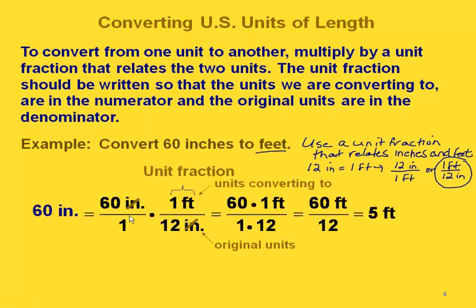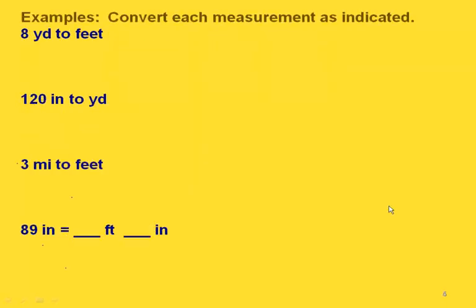Here's our calculation: we have 60 inches over 1, multiplied by 1 foot over 12 inches. Notice that the inches cancel out — since we started with inches in the numerator, having inches in the denominator of our unit fraction allows them to cancel. The units left are feet. Multiplying straight across gives us 60 feet over 12, and simplifying that gives us 5 feet.